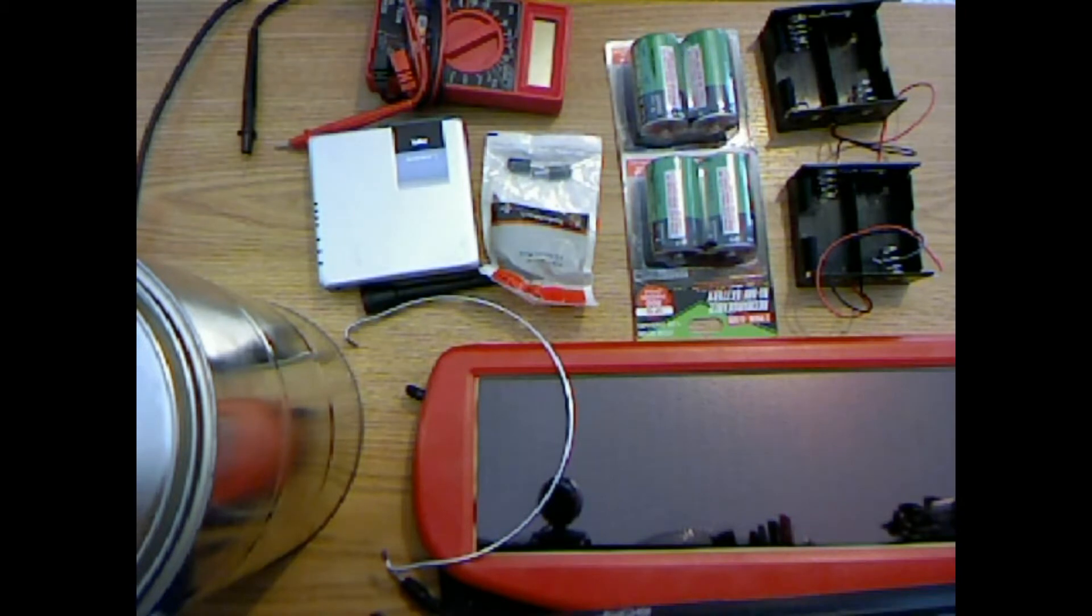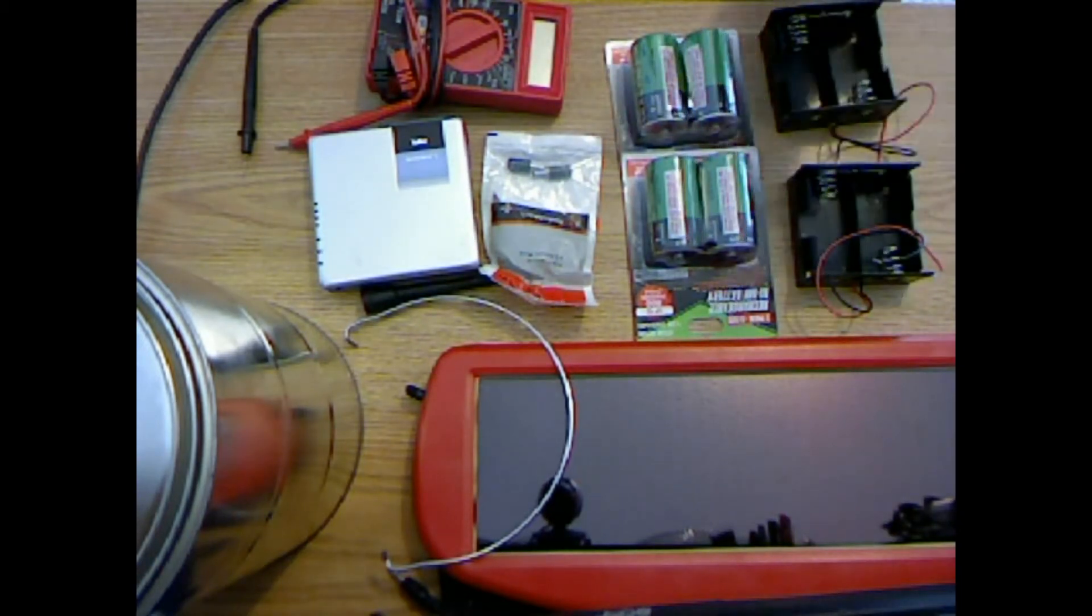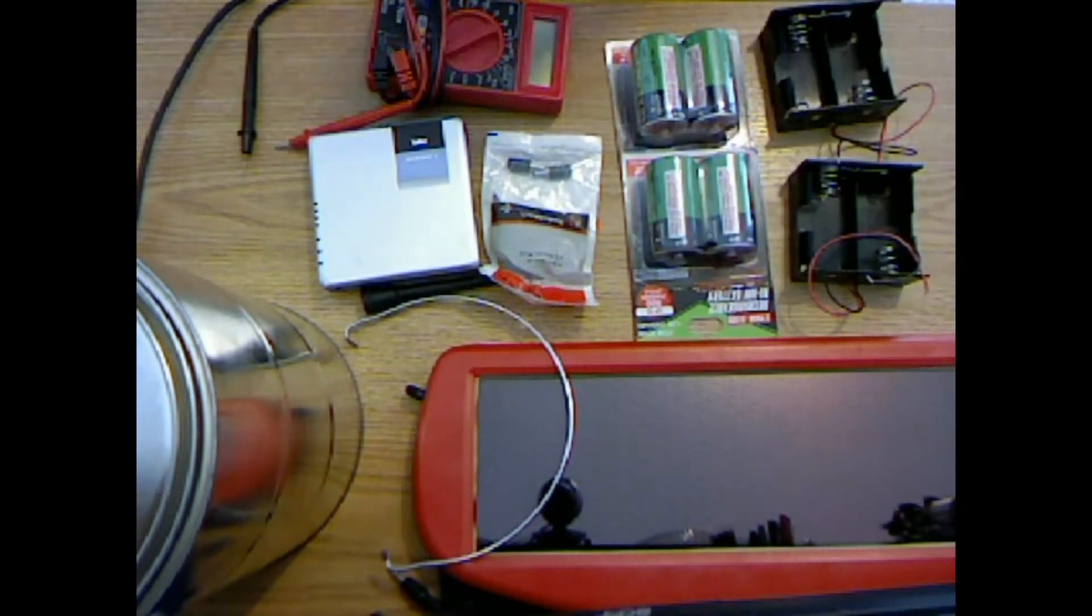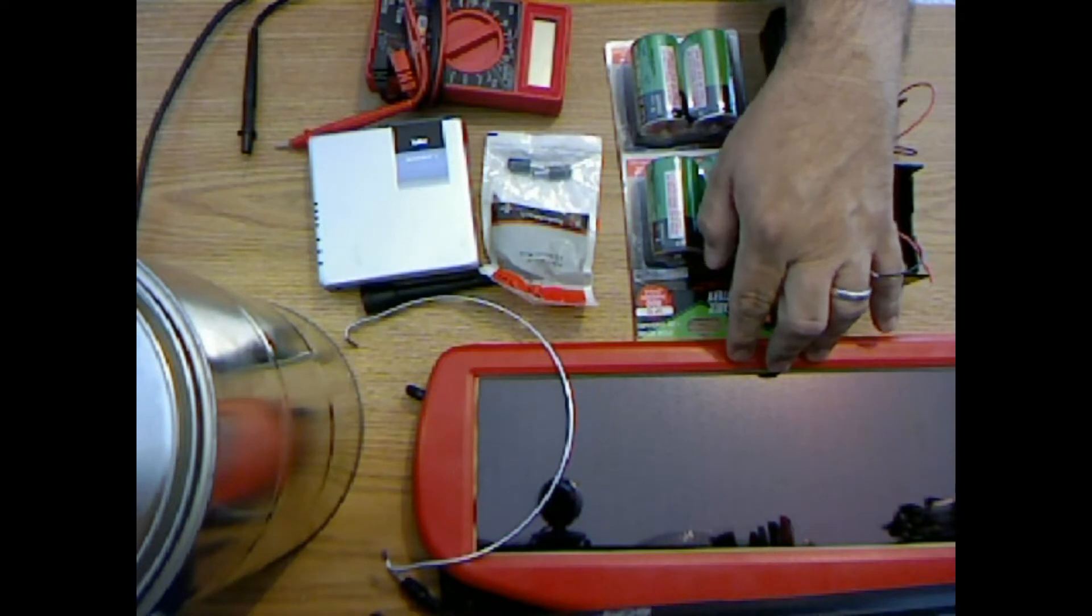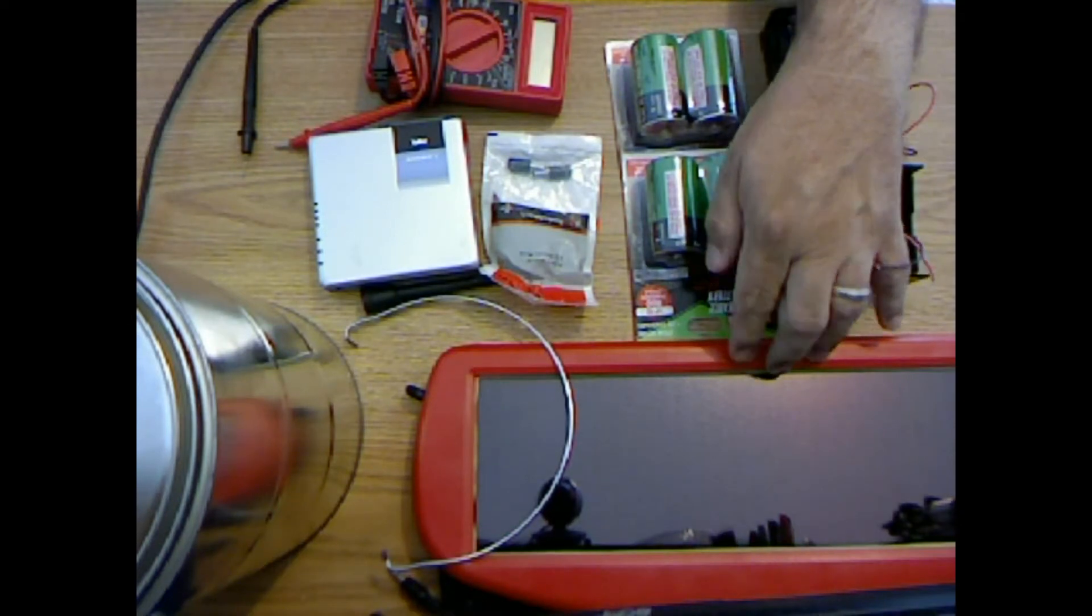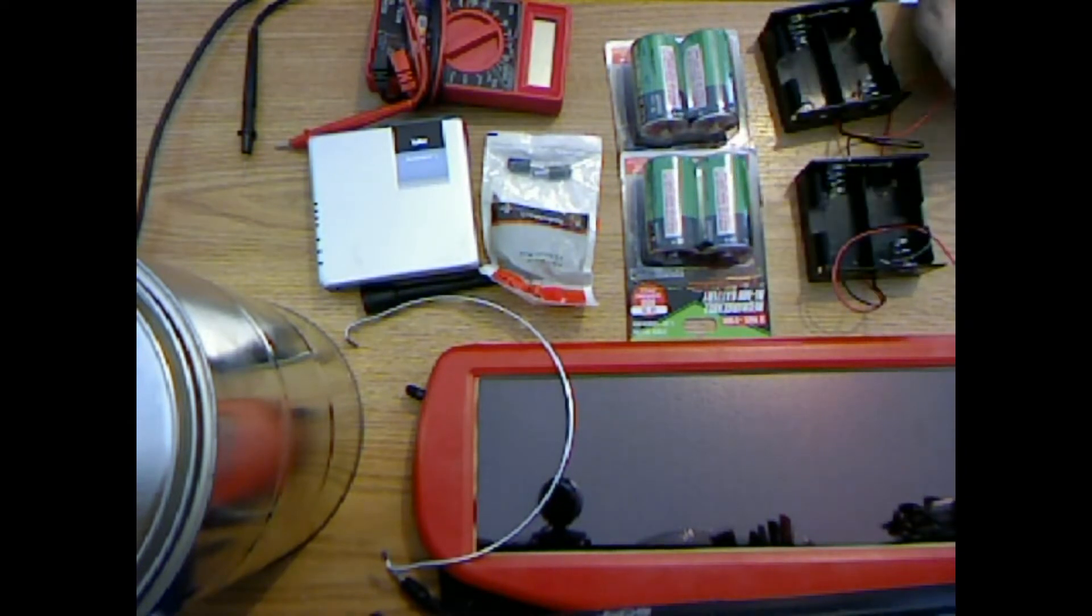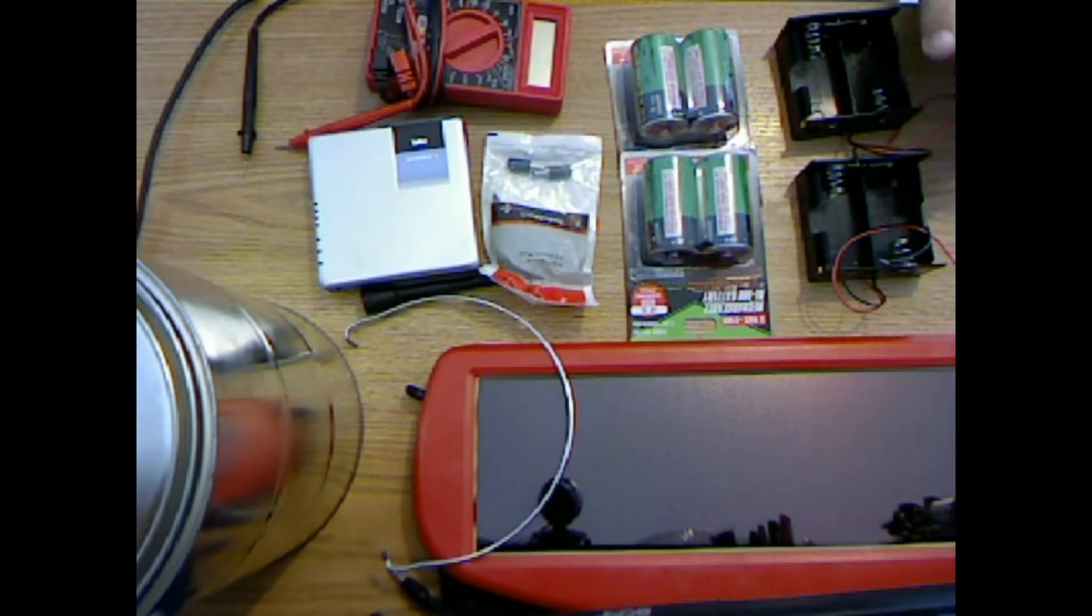I got a solar panel here. It's an old Harbor Freight solar panel. It puts out about 24 volts open, 0.08 amps with no load on it. With the load, it puts out about 12 volts. We'll see how that works with the load of charging these batteries.